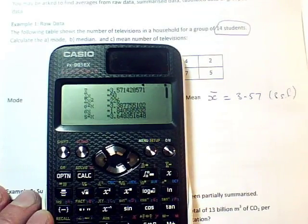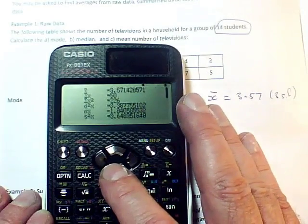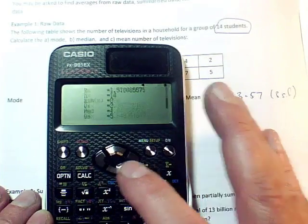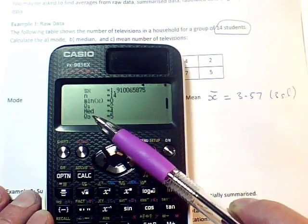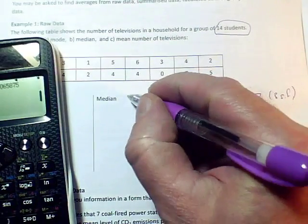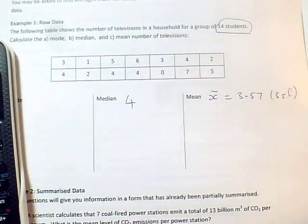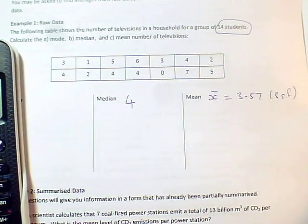Now I can get another average directly from the calculator. Press the down button on the keypad here, and it says med, that means the median, and it's telling me the median is 4. So that's the item that if I arranged them in order and looked in the middle of the list, I would get.